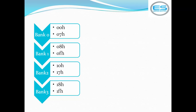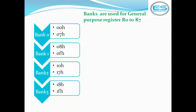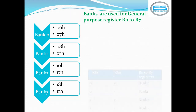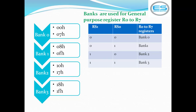Looking at banks individually: there are four banks — bank 0, bank 1, bank 2, and bank 3. The general-purpose registers use these RAM memory bank locations to store their data. Each bank has eight locations. Bank 0 addresses are 00h to 07h, bank 1 is 08h to 0Fh, bank 2 is 10h to 17h, and bank 3 is 18h to 1Fh.